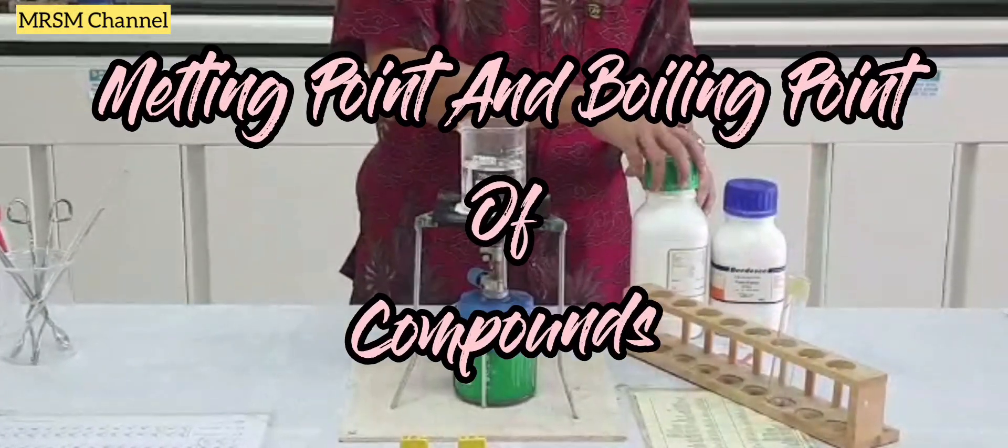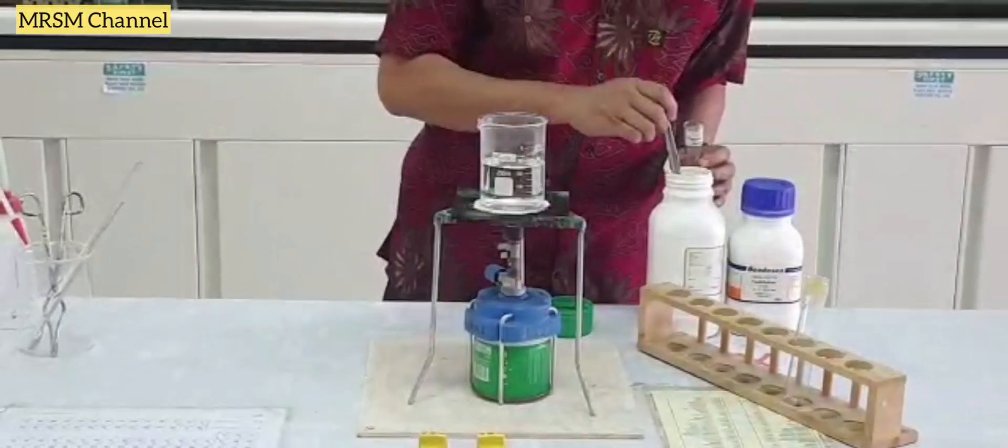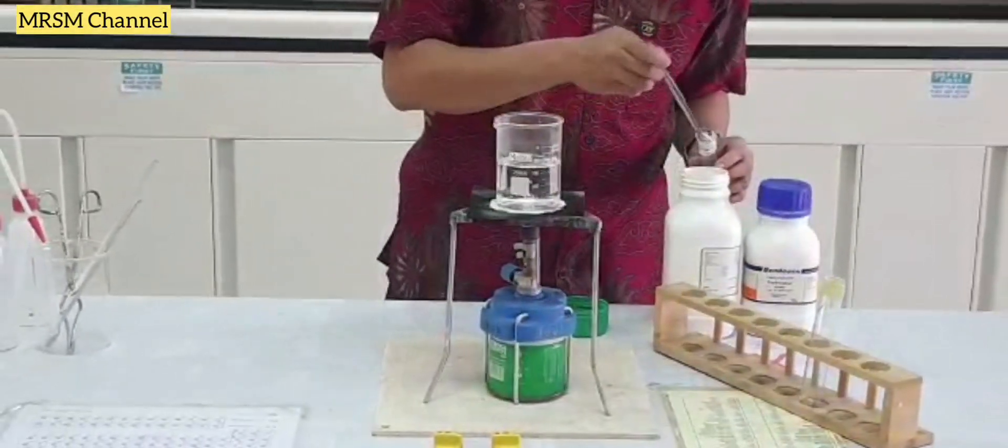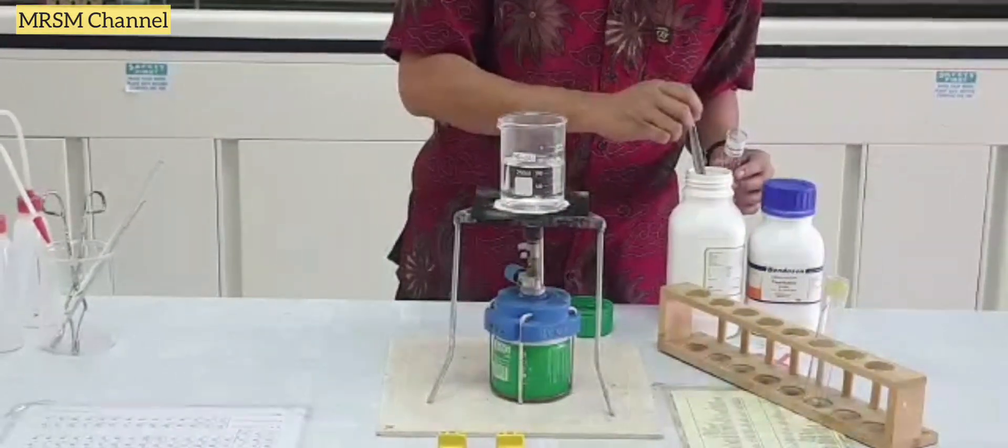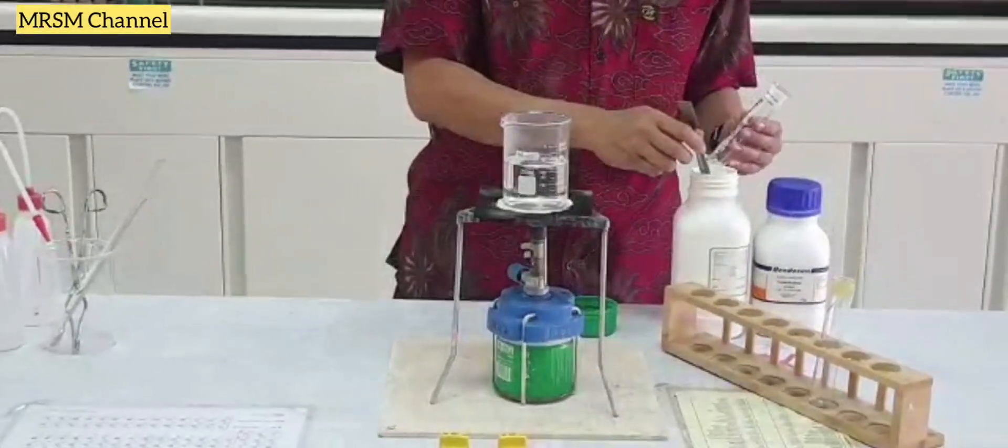Hello everyone, today we are going to do melting point and boiling point of a compound. So first I take some of the magnesium chloride into a boiling tube using a spatula.